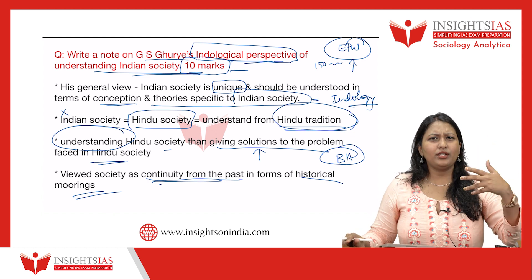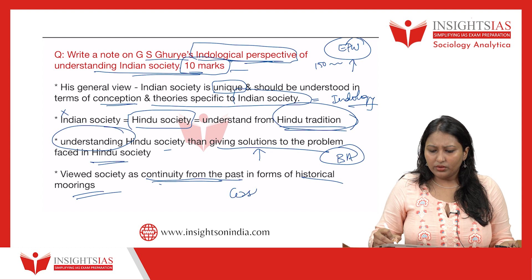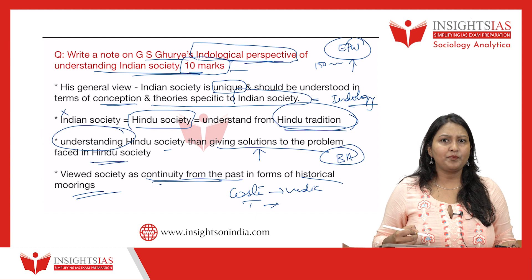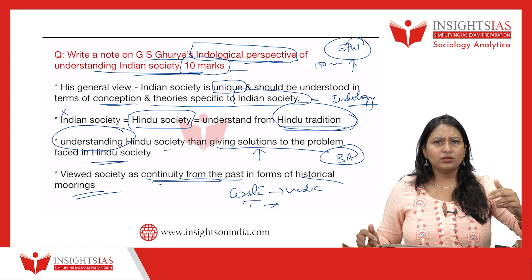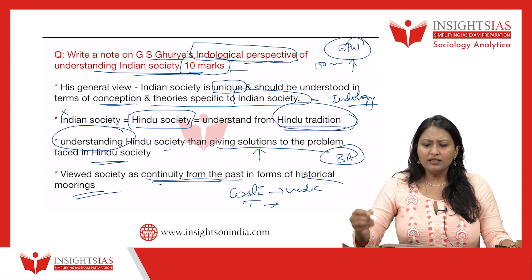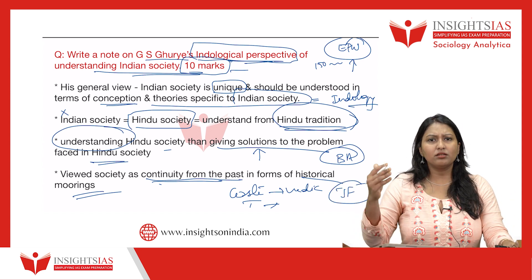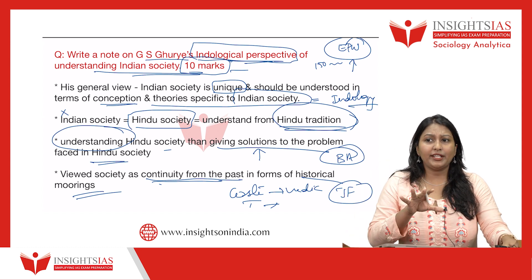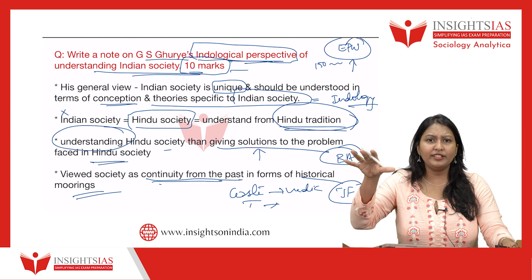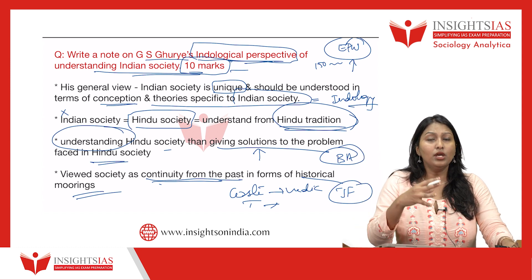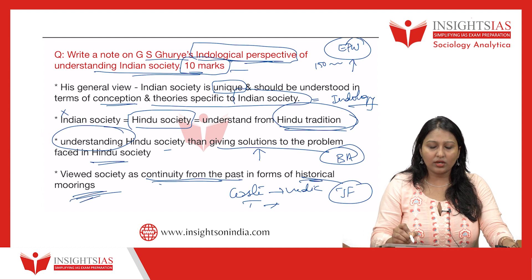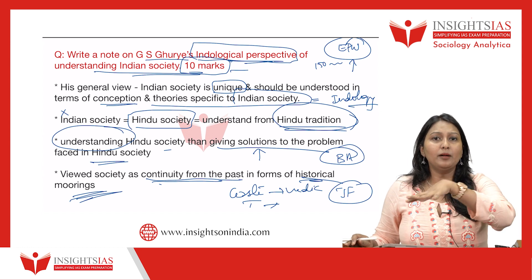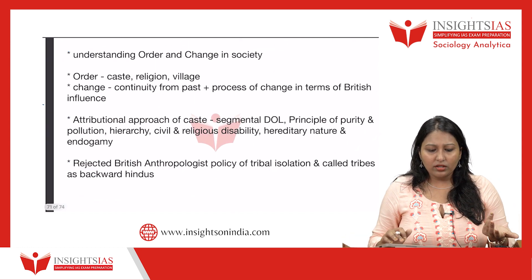Ghurye viewed society as having continuity from the past — in terms of historical moorings. Take anything in Indian society: the caste system has been there since Vedic times; tribes continue their culture; the joint family has existed since time immemorial. To understand the continuity of Indian society, how things are changing, we need to understand from historical moorings — from the historical point of view.